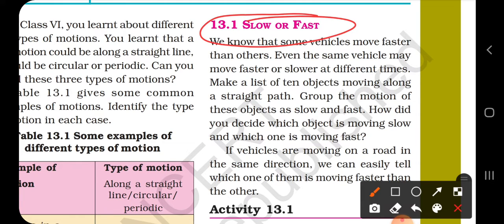How will you define slow motion and fast motion? If a body covers the distance in a short period of time, it is called fast motion. And when it takes a long period of time, it is called slow motion.